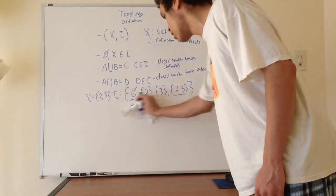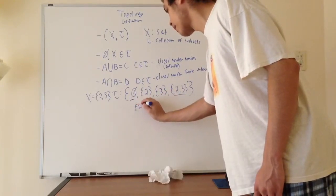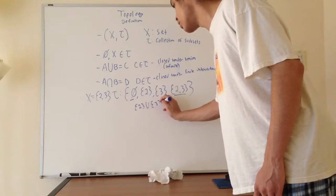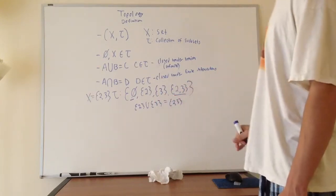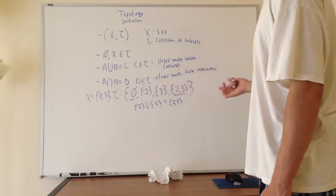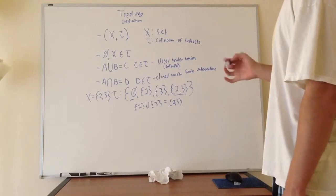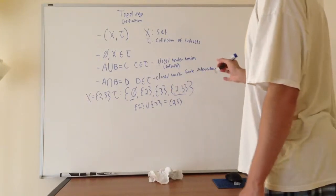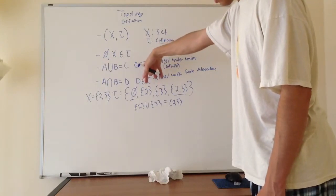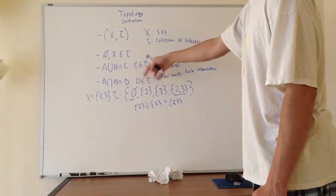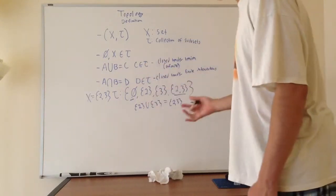Now, what if we decided to take the union of 2 and 3? And of course, this is just set theory. So we're going to get {2,3}. And that of course is present. And of course, the union of {2,3} with 3 is just going to be {2,3}, and for 2. So we can see here that for any subset in here, the union of those two subsets will also be inside this larger set of tau, this family of subsets.